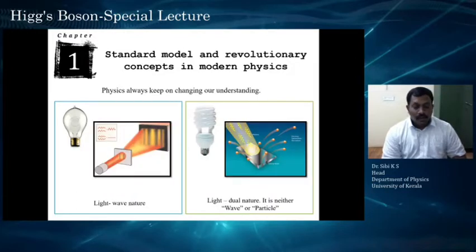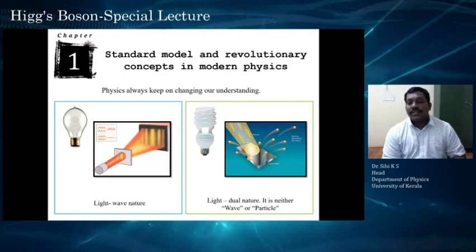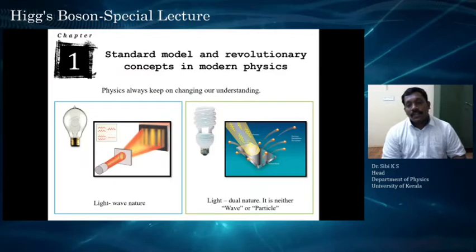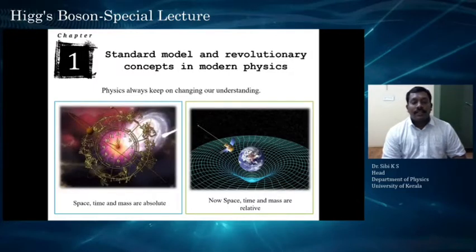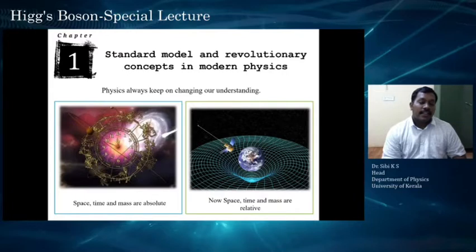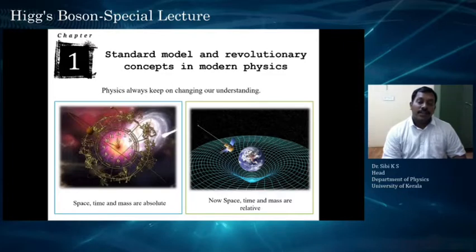We also thought that light is a wave, but after the photoelectric effect was discovered, we know that light has a particle nature too. Today we know that light has a dual nature — it is neither purely a particle nor a wave. Likewise, in space, time, and mass, everything was changing. The absolute concepts involved in these fundamental quantities changed with the evolution of relativity, and now we know that space, time, and mass are relative.